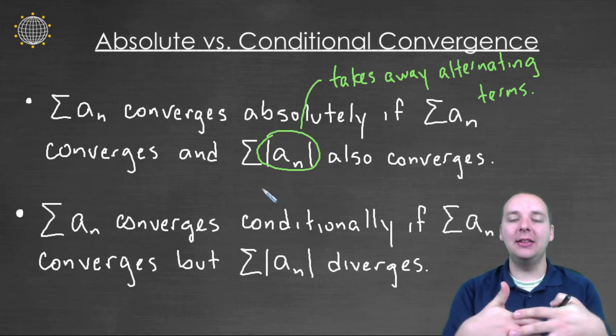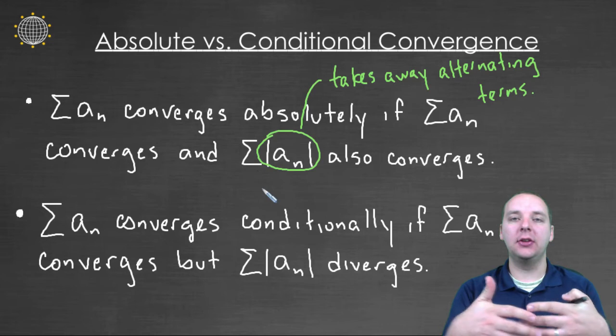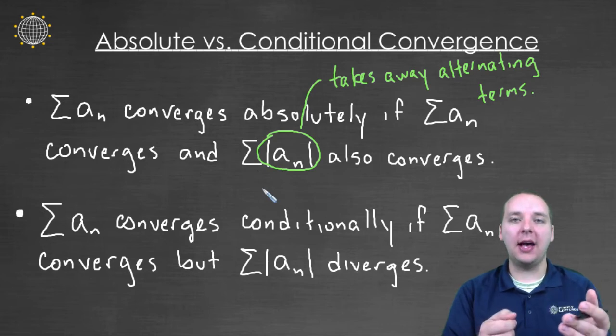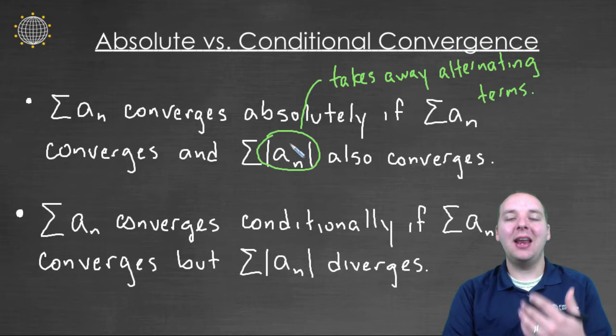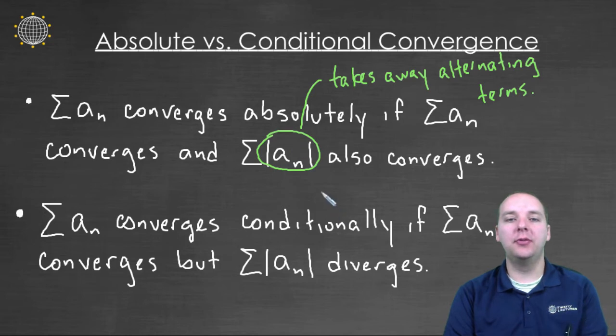For instance, if you had plus a half and then minus a half, they would cancel each other, and in effect zero each other out. And so if we did not have the plus, minus, plus, minus, it would make it much more difficult to converge. It's a stronger type of convergence.